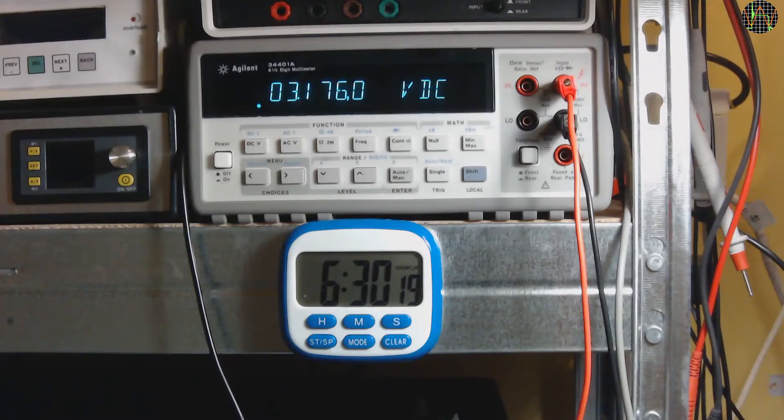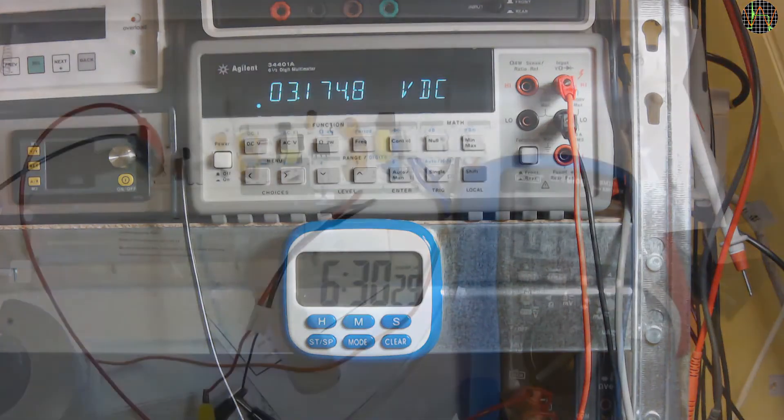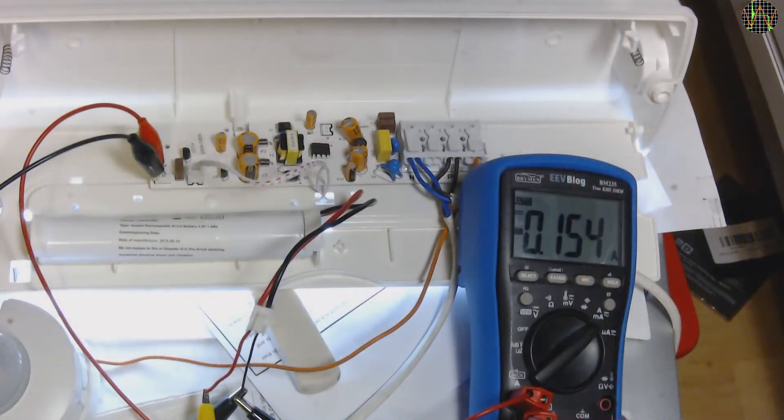Another 30 minutes later, the voltage has dropped to 3.17V, which means 1.05V per cell and you can see that the voltage is dropping much faster now. And the current has dropped another 50mA to 154mA. This means the current is also dropping faster.